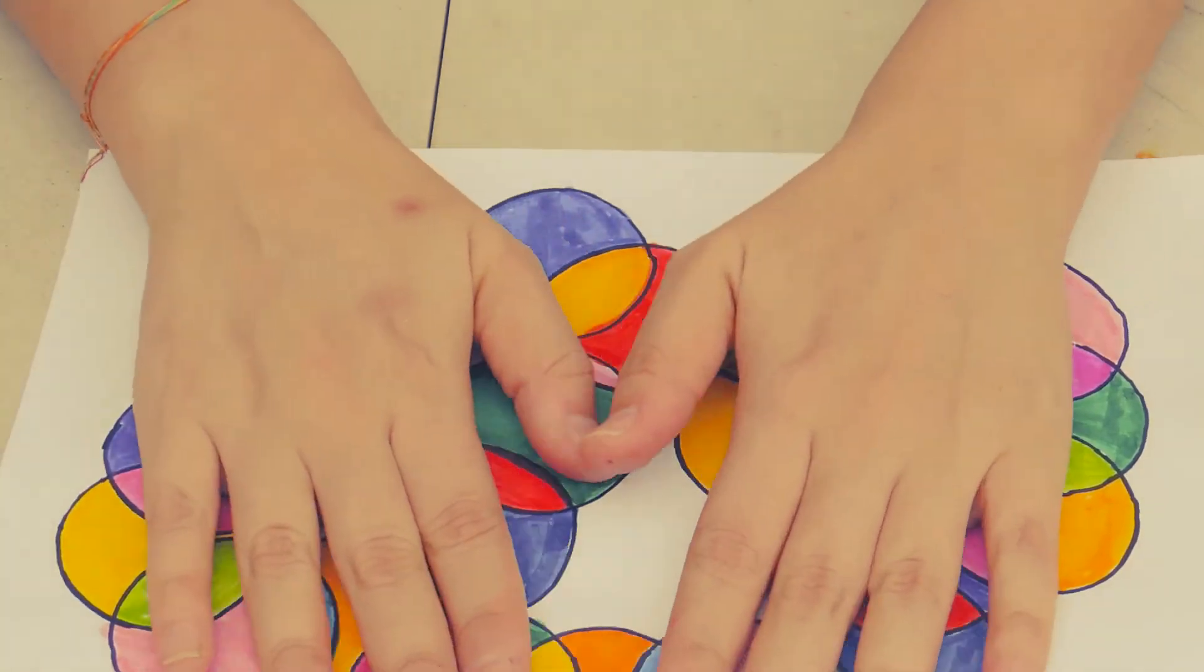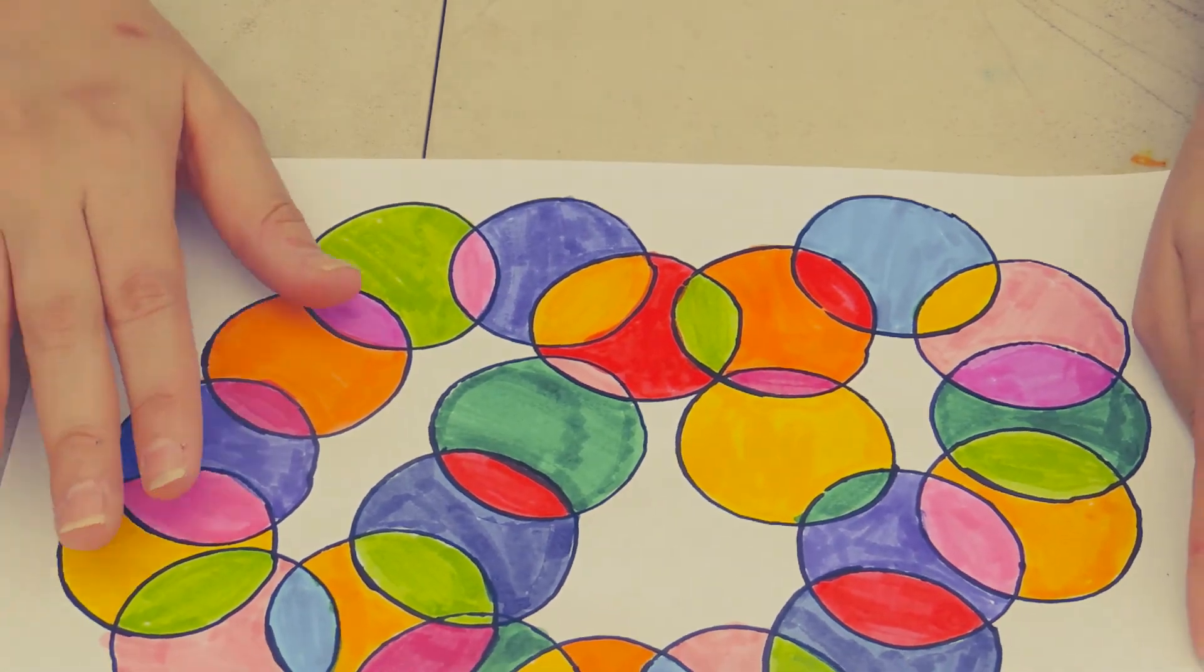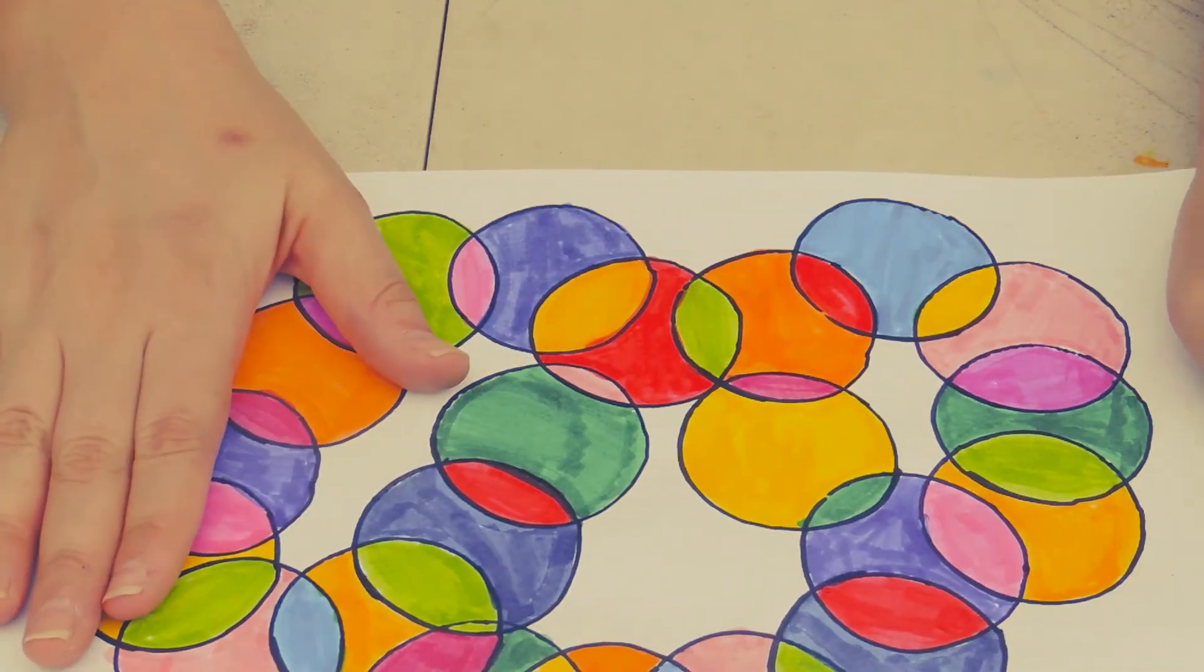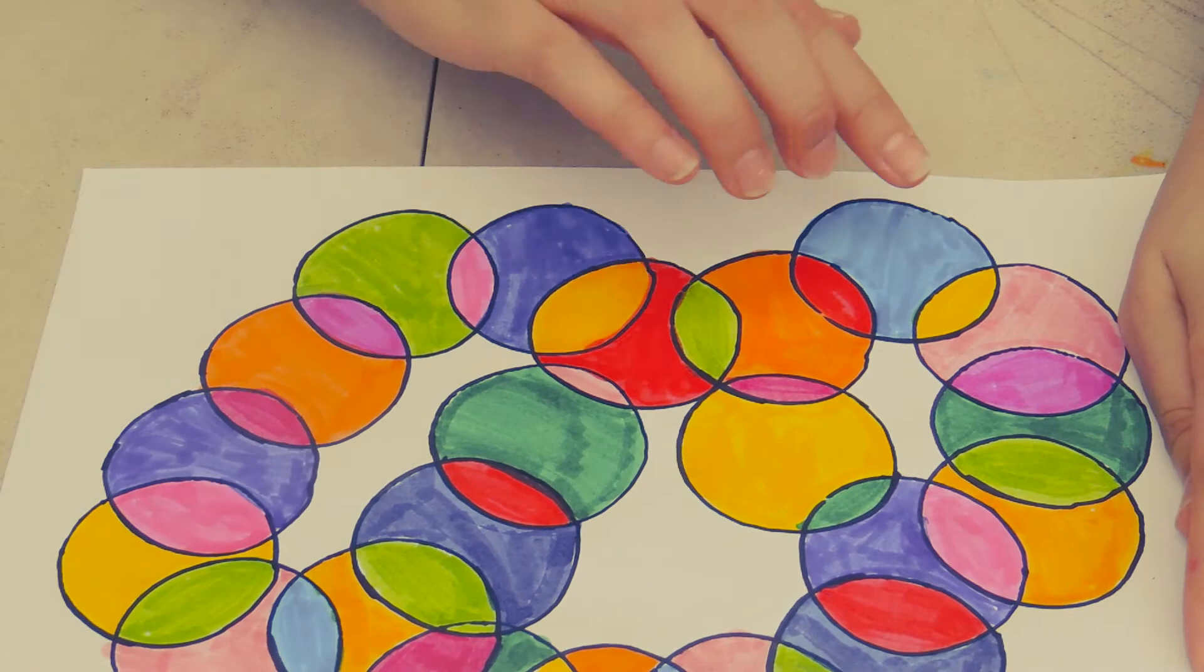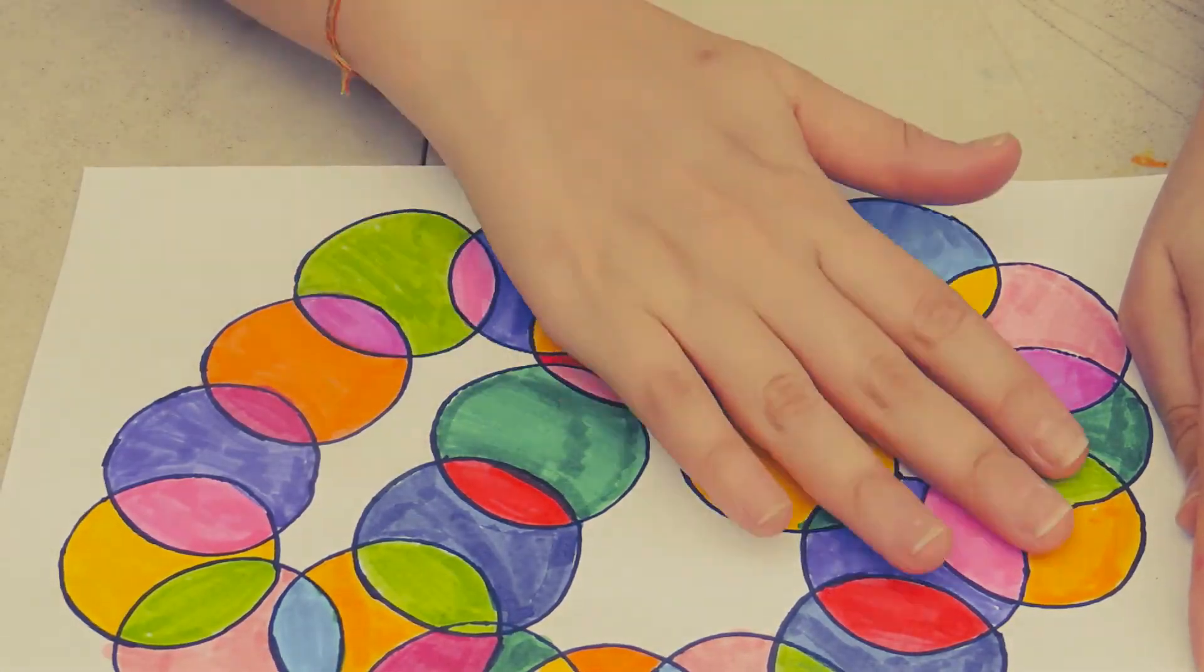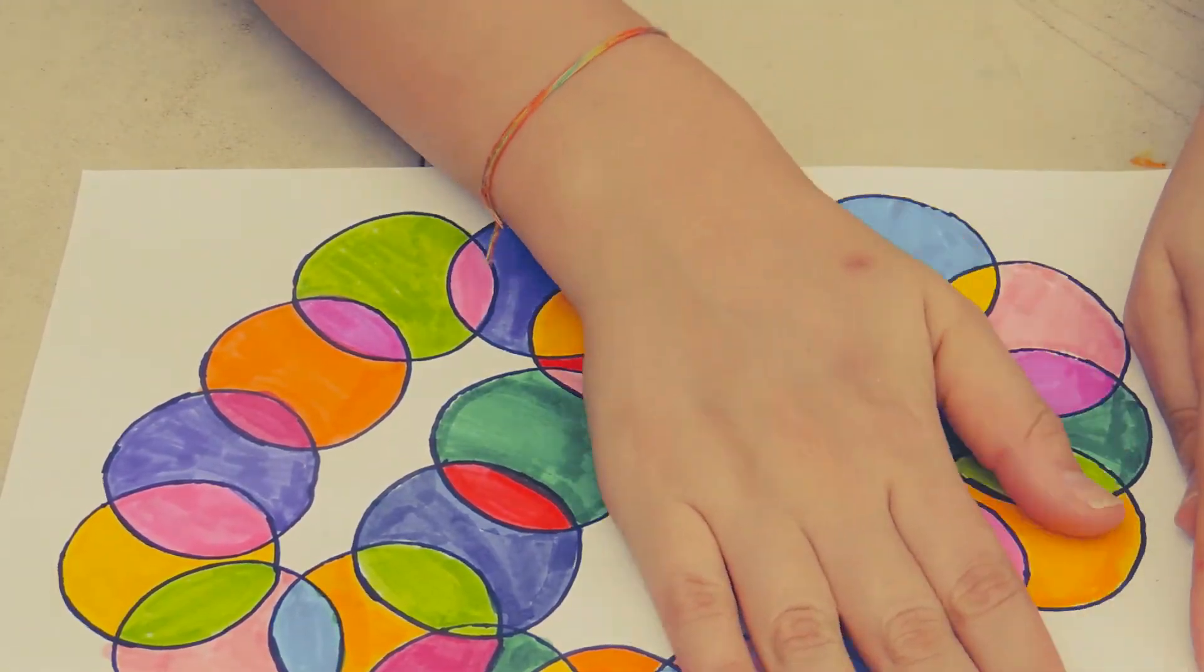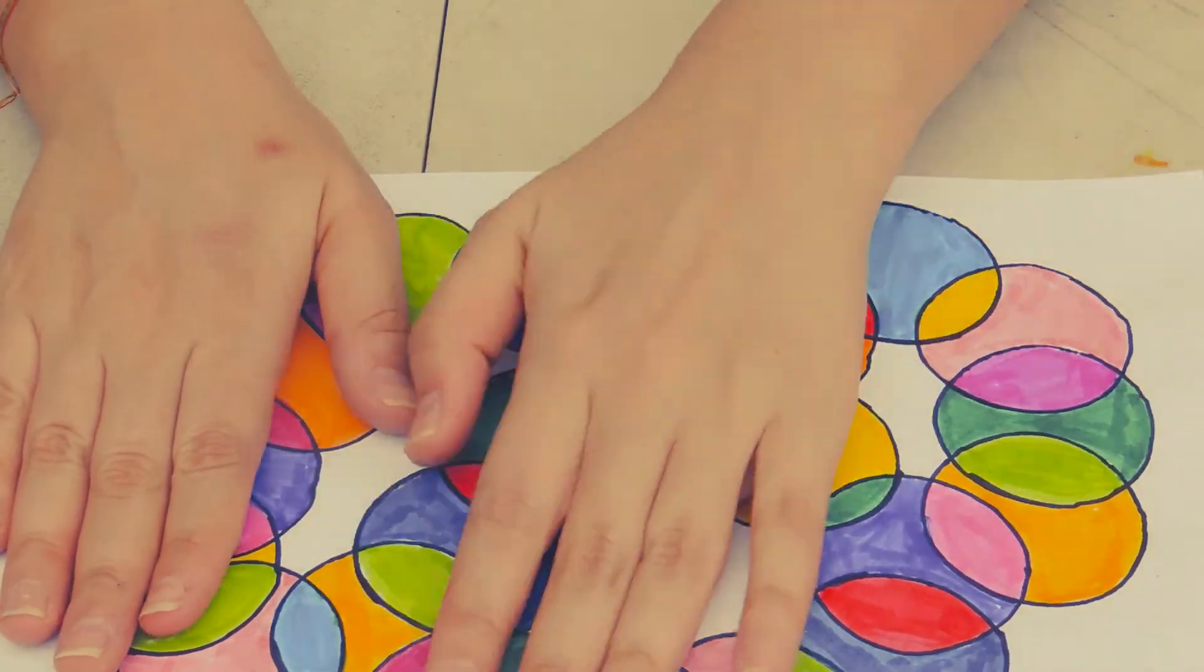Now I finished coloring my circles. Look how nice and how colorful it turned out. You can create circles all around and create patterns. I decided to be a little bit more creative and use all the markers that I have.